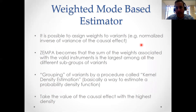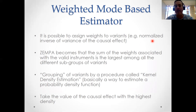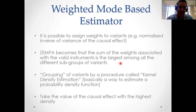That's the simple mode-based estimator. We can also build a weighted mode-based estimator by assigning weights to each variant. For example, we could weight each variant according to its precision — by the inverse of the variance of the causal effects — similar to what we did in the weighted median analysis. In this case, the ZEMPA assumption becomes that the sum of the weights associated with the valid instrument group is the largest among all subgroups, meaning you have the greatest weight in the group containing the valid instruments.